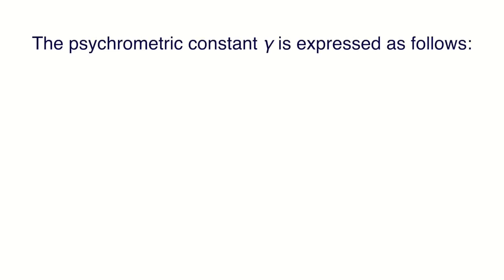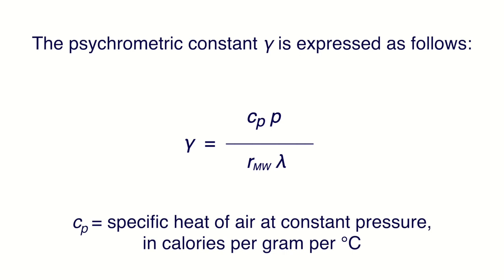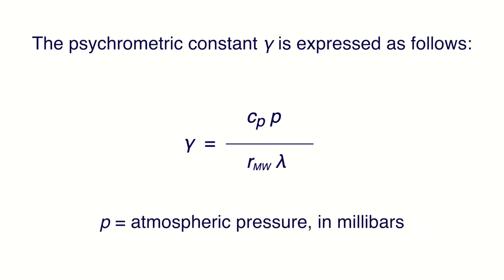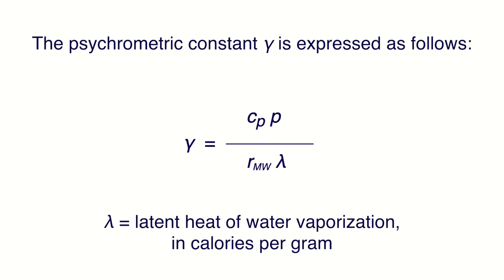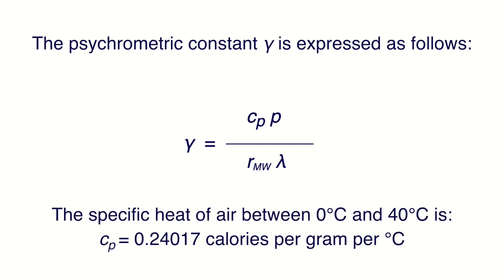The psychrometric constant gamma is expressed as follows, in which C sub P equals the specific heat of air at constant pressure in calories per gram per degree Celsius; P equals atmospheric pressure in millibars; R sub MW equals the ratio of the molecular weight of water vapor to dry air, equal to 0.622; and lambda equals the latent heat of water vaporization in calories per gram. The specific heat of air between zero and 40 degrees Celsius is 0.24017 calories per gram per degree Celsius.